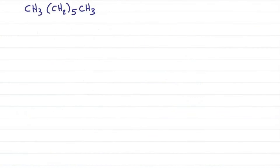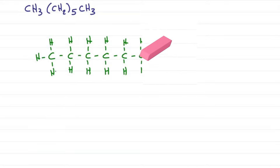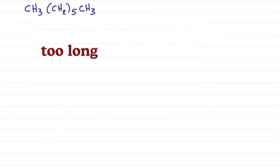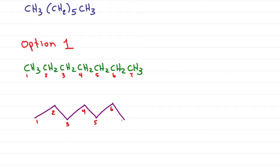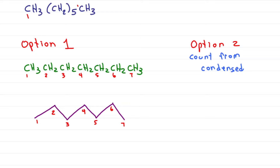What if you're given a longer chain with parentheses in the middle? Option one: draw the Lewis or structural formula — that was way too long. Option two: expand it so you see exactly what's going on. Number the chain and draw the zigzag, making sure you have the correct number of carbons. You can also count directly from your condensed formula: here I have carbon one, five CH2s give me carbons two through six, and this is carbon seven. For a linear chain you can count five, six, and seven, then draw it out the same way.